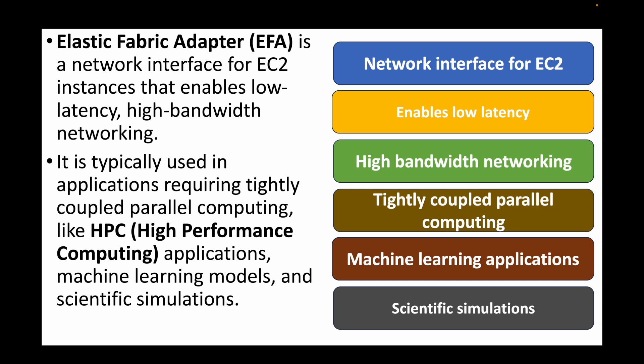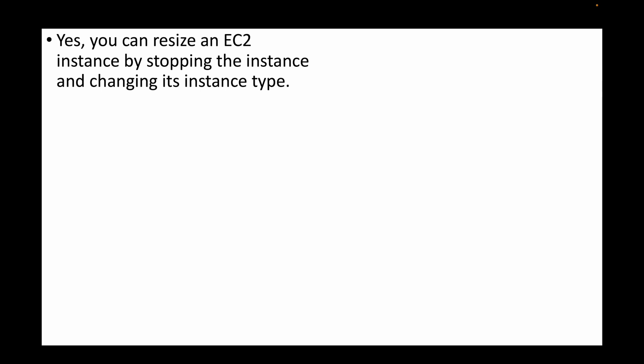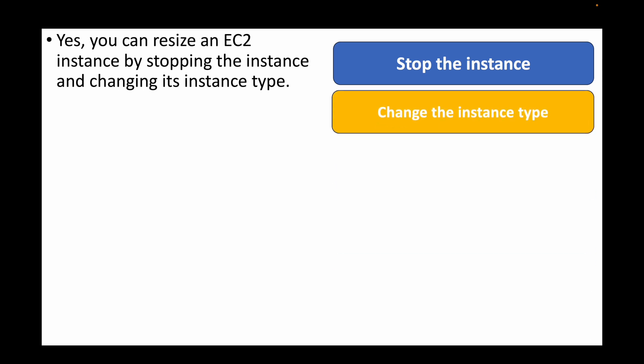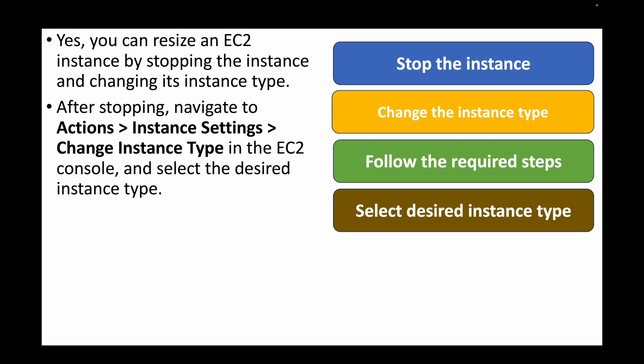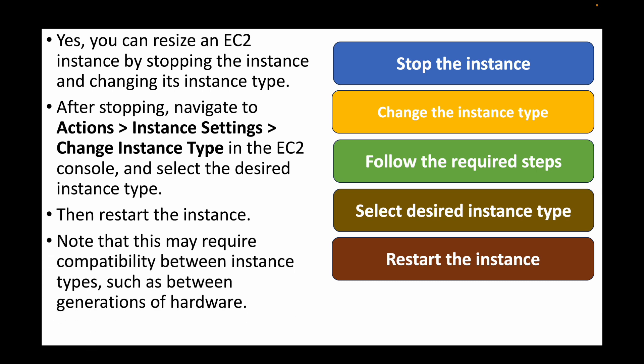The next question is: can you resize an EC2 instance, and if so, how? Yes, it is possible to resize your EC2 instance by changing the instance type. For example, if you are running a t2.micro and want to change to t2.medium, first stop the instance. Once stopped, navigate to Actions > Instance Settings > Change Instance Type, select the desired type such as t2.medium, and then restart the instance.